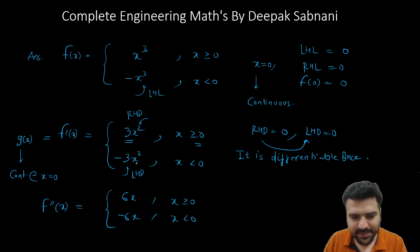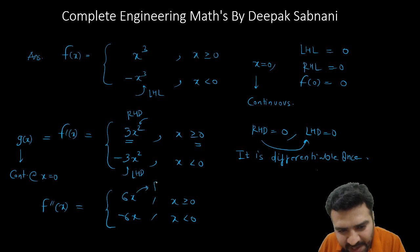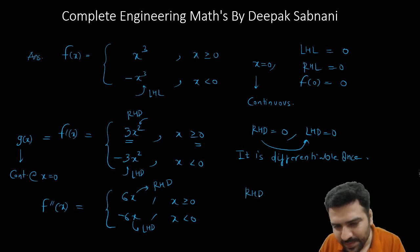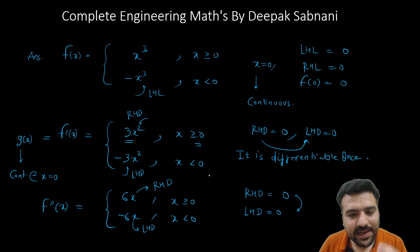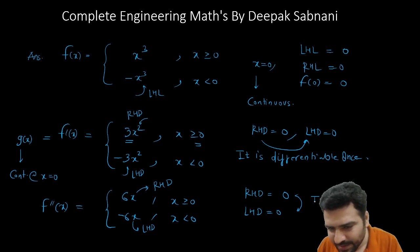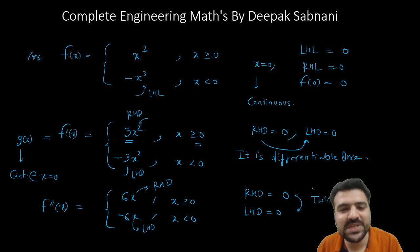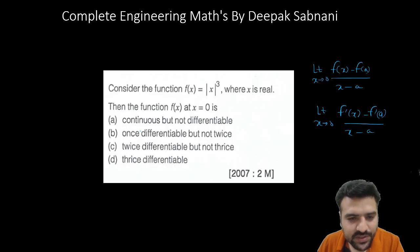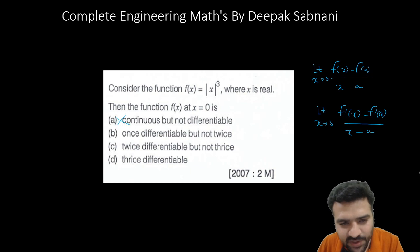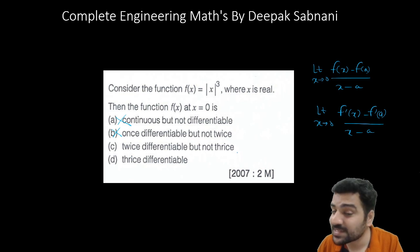At x = 0, the right-hand derivative of f''(x) = 6(0) = 0 and the left-hand derivative = -6(0) = 0. Both are equal, so f(x) is twice differentiable. Options 'continuous but not differentiable' and 'once differentiable but not twice' are both wrong. So f(x) is at least twice differentiable. Now we check if it is thrice differentiable.